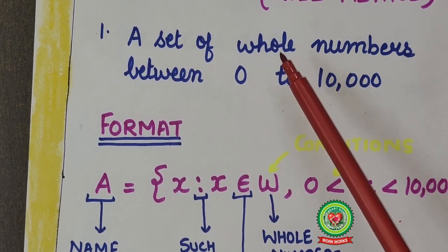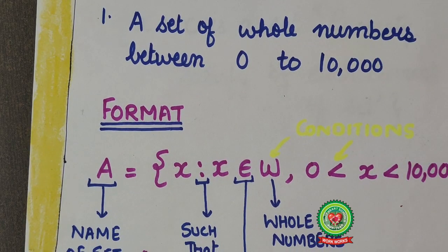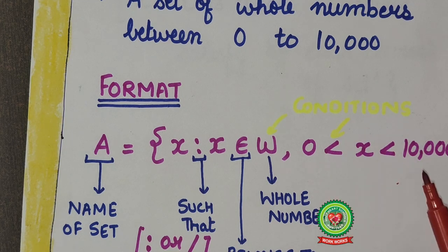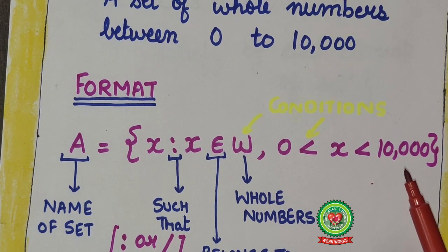Now we are restricted with one condition over here, that is x is greater than zero but less than ten thousand, curly bracket close. So this is the format to write in set builder form.